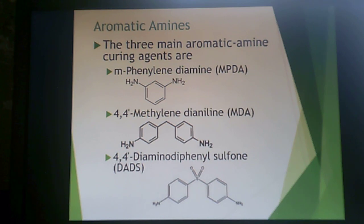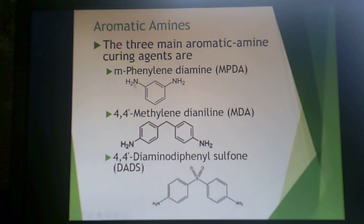The three main aromatic amine curing agents are metaphenylenediamine, 4,4'-methylenedianiline, and 4,4'-diaminodiphenylsulfone. What you see in these structures are amines that have hydrogens present on them, meaning they can participate in the cross-linking reaction.